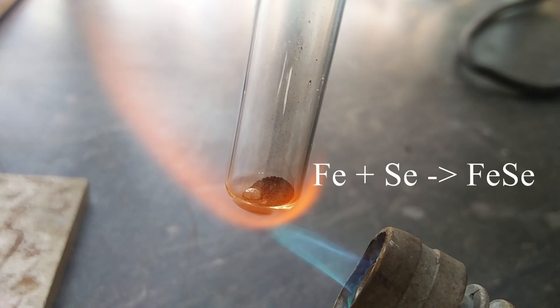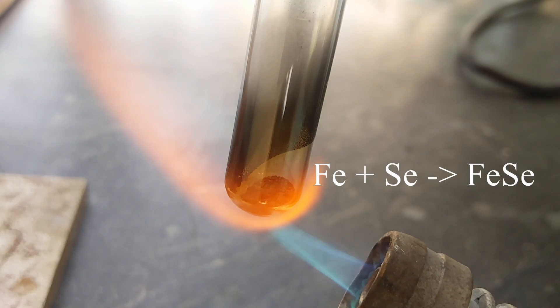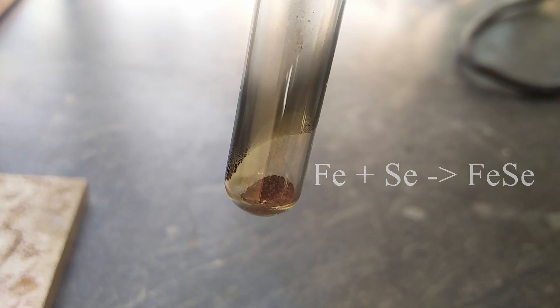Like sulfur, selenium can react with metals to form selenides. Here, I show you the reaction of selenium with iron, which forms iron selenide.